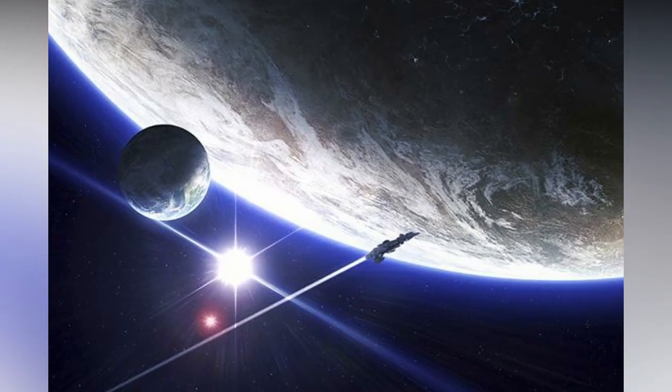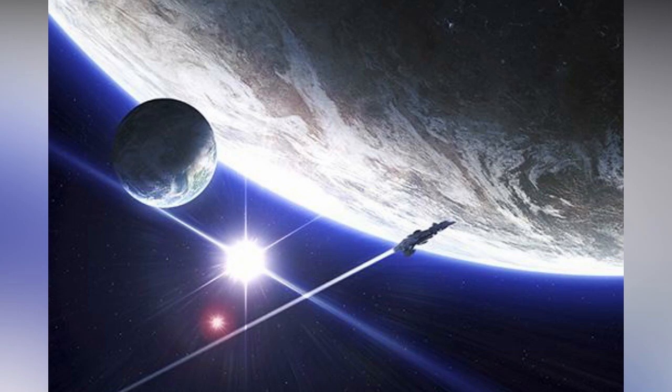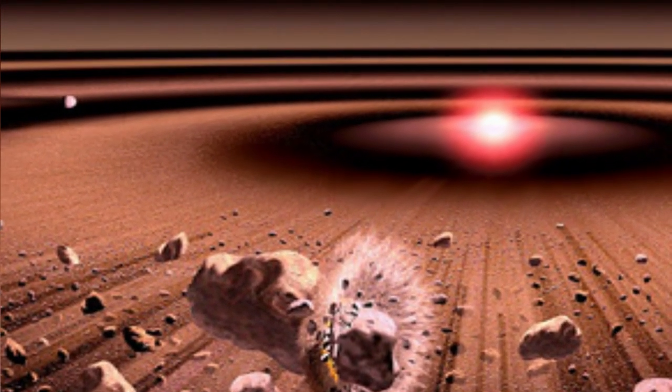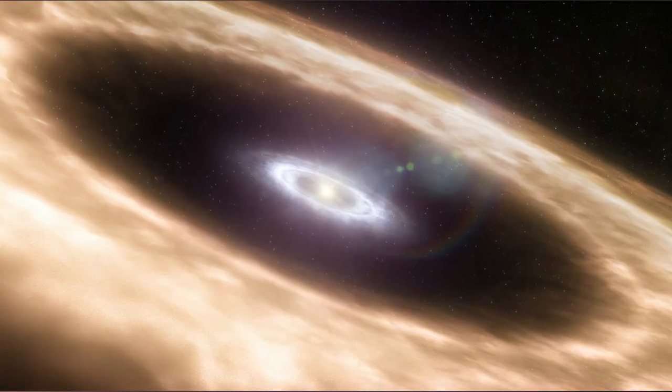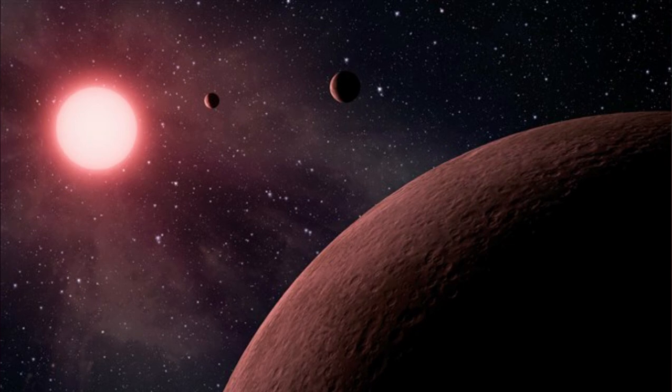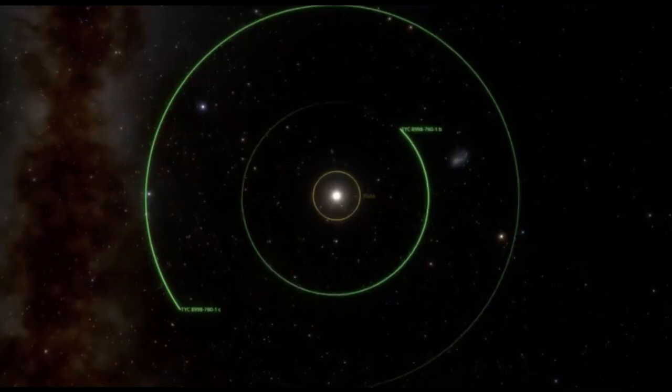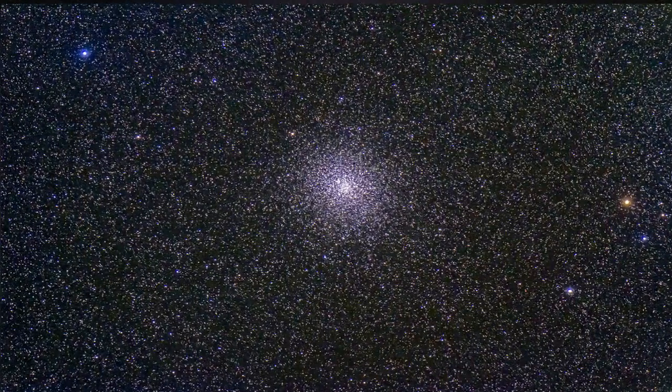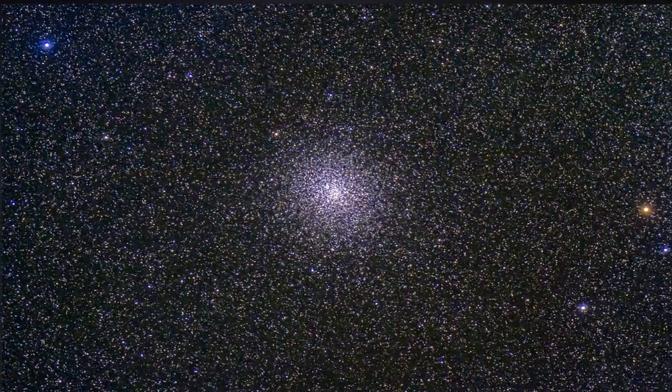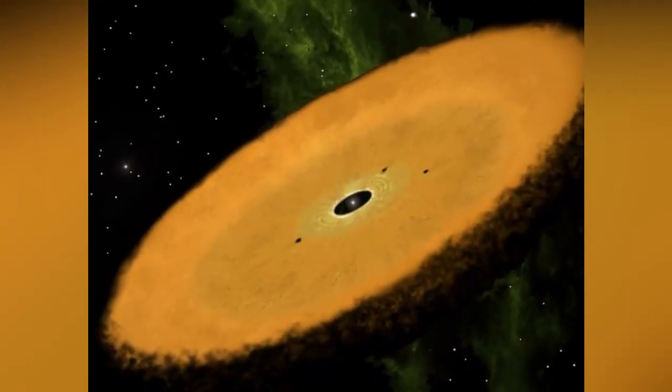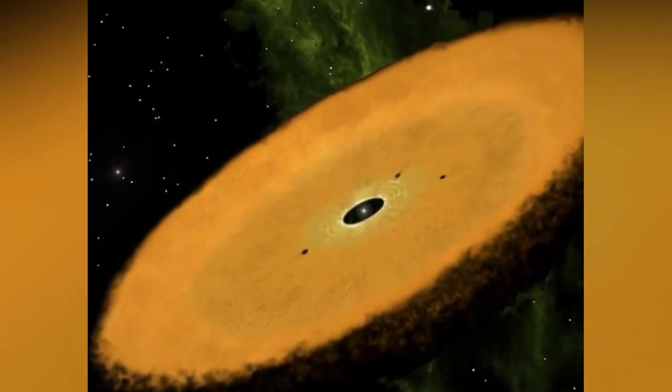The researchers worked through every known possibility, but each solution presented a new problem. For example, they investigated the possibility of some kind of circumstellar disk of dust. However, after looking for the infrared signal associated with these disks, no such signal could be seen. Also, the star is a mature F-type star, approximately 1.5 times the size of our sun. Circumstellar disks are usually found around young stars.